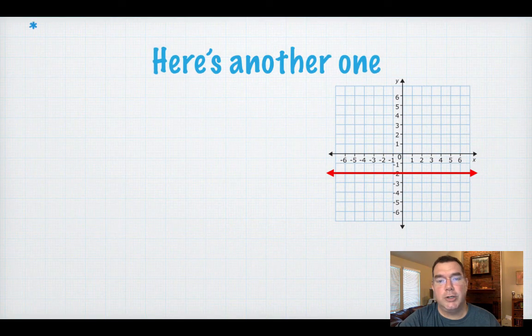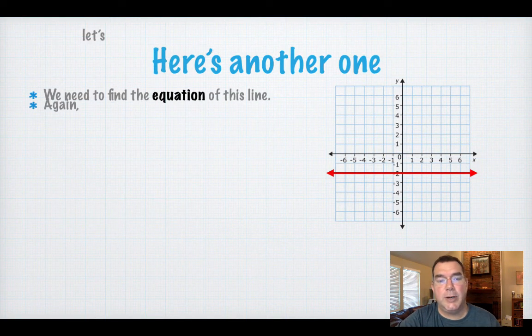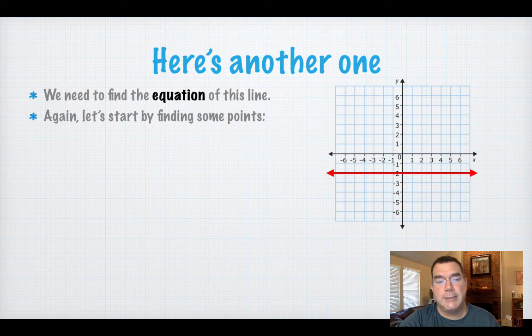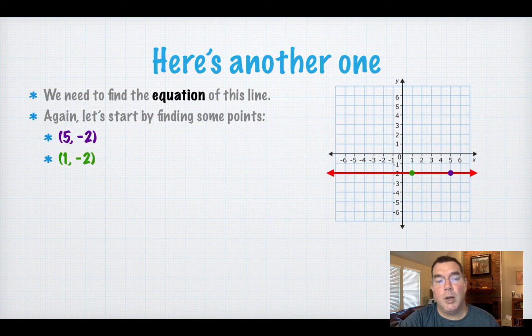Here's another one. I've drawn a new red line. I need to find the equation of that one. So we'll find some points. That purple one is (5, -2). The coordinates of the green one are (1, -2). And the coordinates of the blue one are (-4, -2).